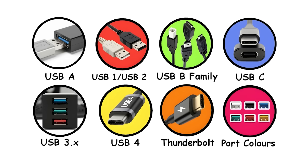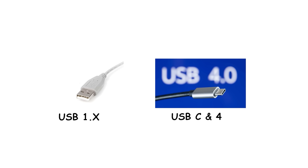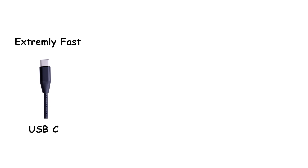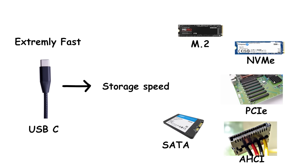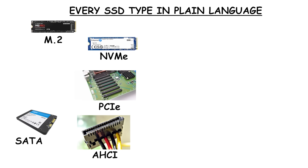And that's it for the types of USB ports. Every generation has its place, from the slow USB 1.x to the all-in-one USB-C and USB 4. But while USB-C can transfer data insanely fast, your storage speed matters just as much. M.2, NVMe, PCIe, SATA, AHCI — if those sound like random letters instead of real tech, you're not alone. Picking the wrong SSD type is worse than picking the wrong USB cable. In the next video, we're breaking down every SSD type in plain language: what each one actually means, which one's fastest, and which one you should buy.